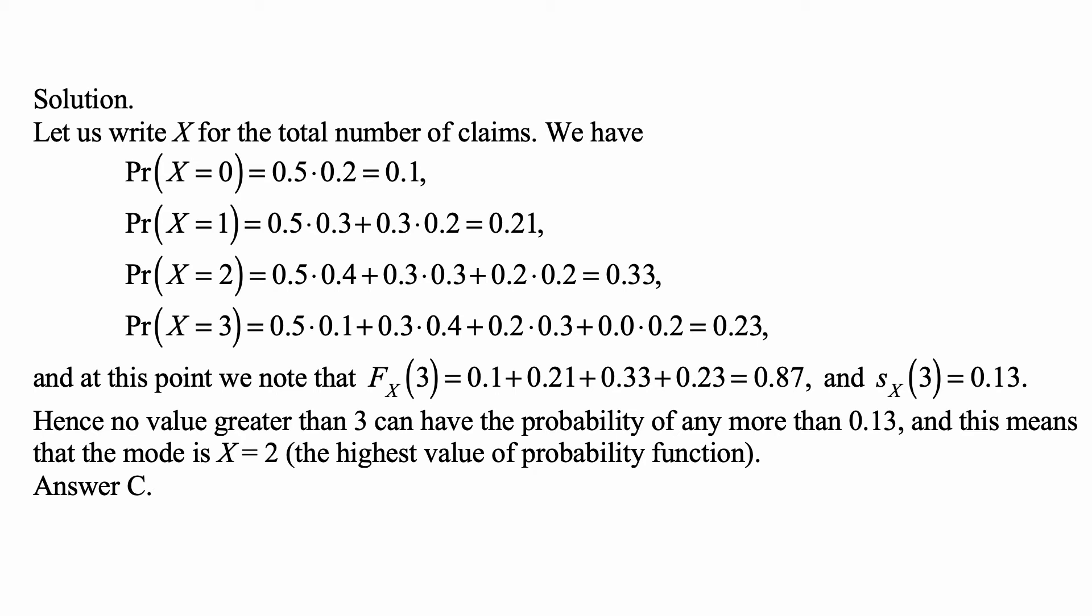Probability of X = 2 is 0 plus 2, 1 plus 1, or 2 plus 0. And again, we just multiply out the probabilities for each pair, and we add them up, and it's 0.33.